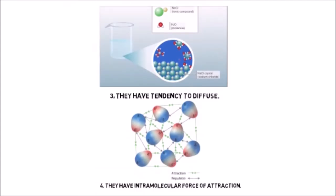Number 3: Particles have a tendency to diffuse. Particles of matter intermix with other types of particles on their own by getting into the space between particles. As we have seen in the activity, the salt particles can get mixed and diffused into the water.